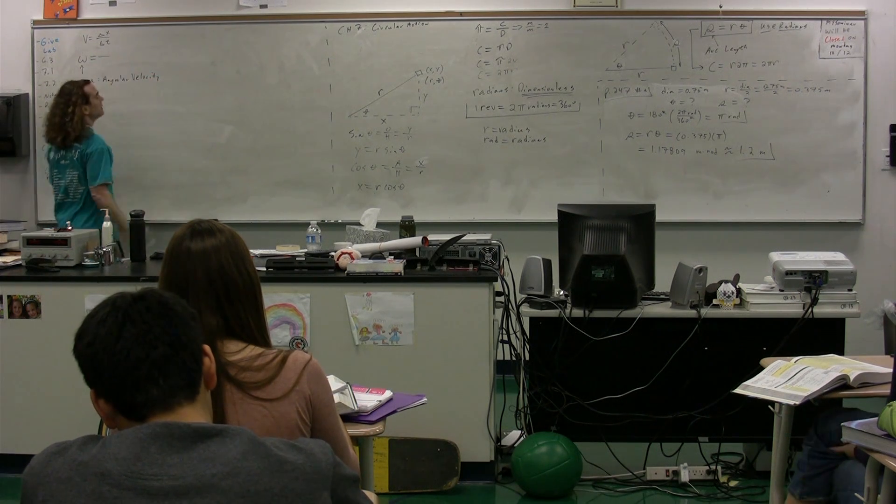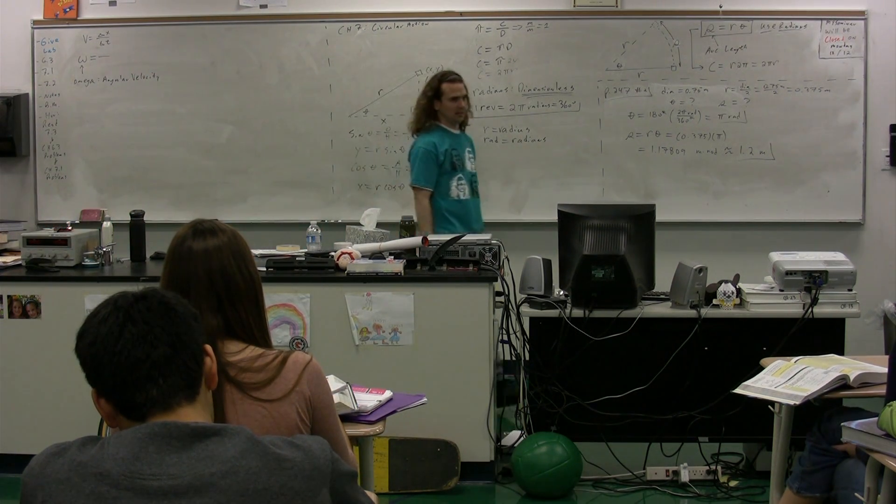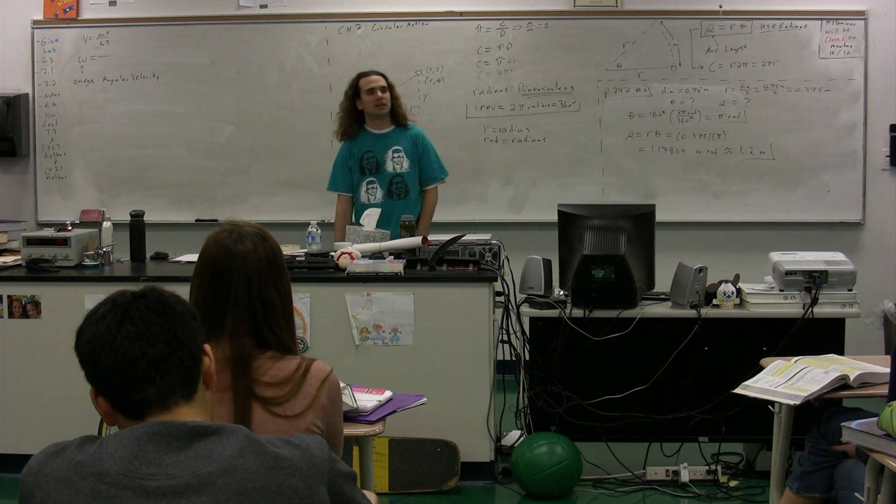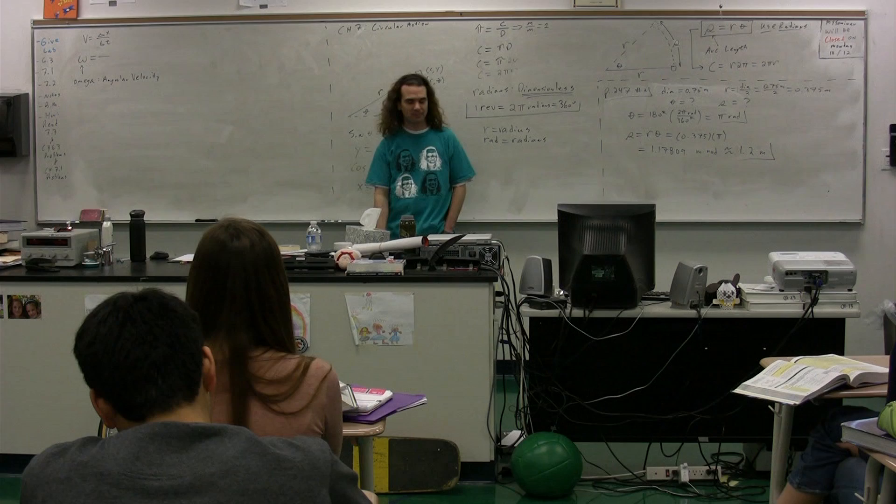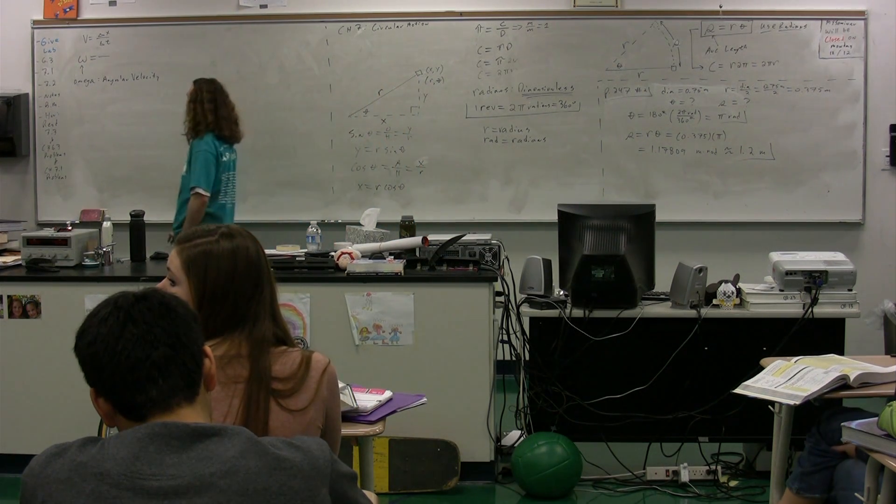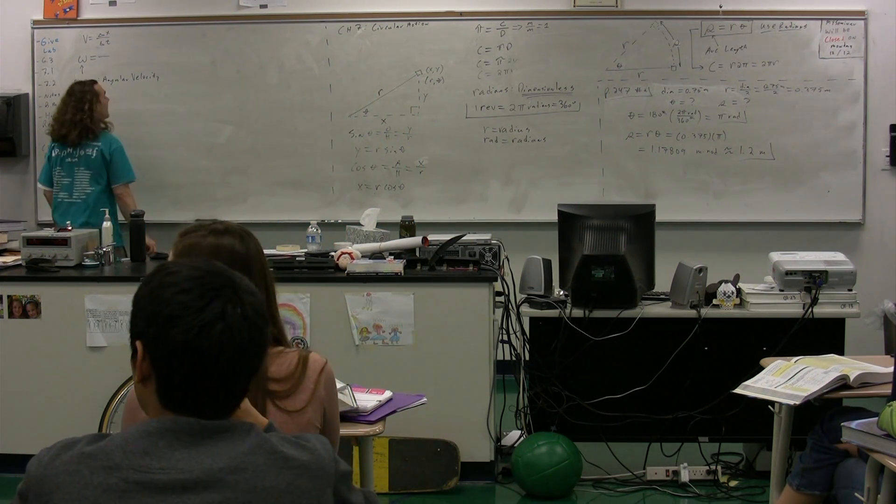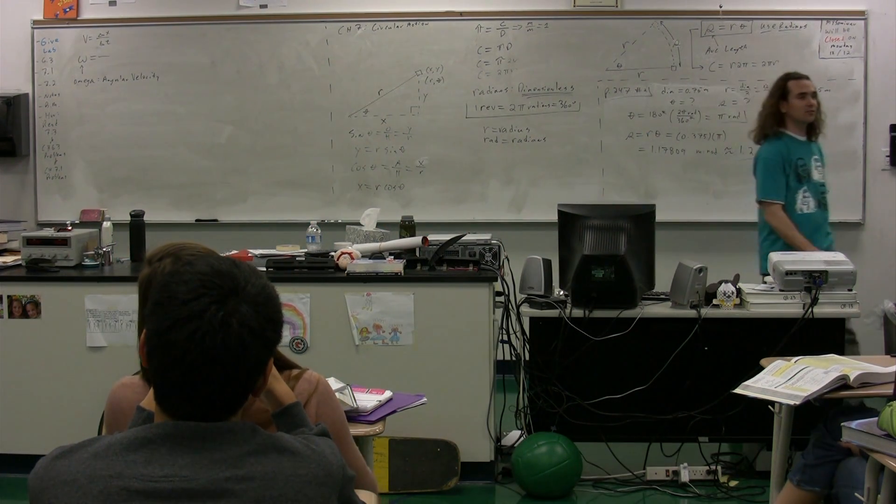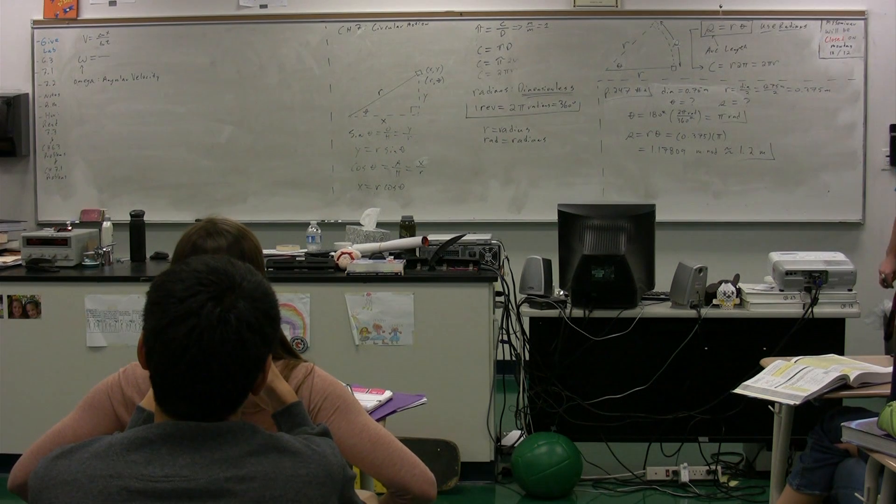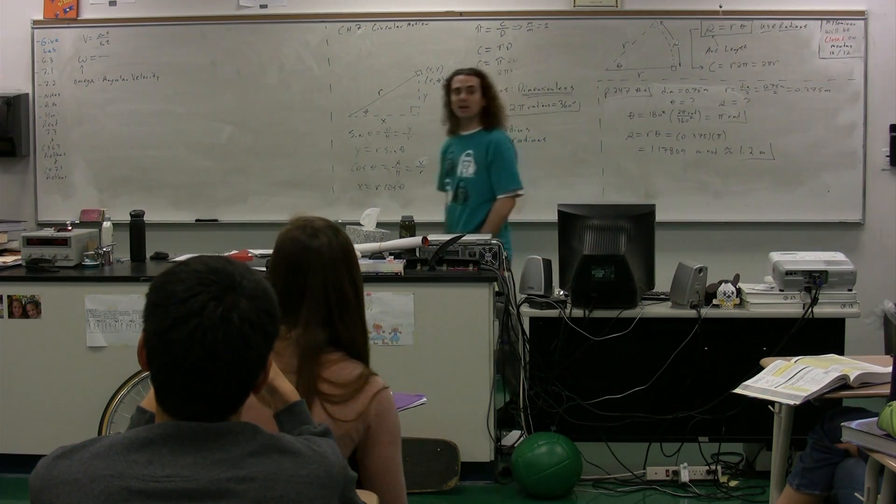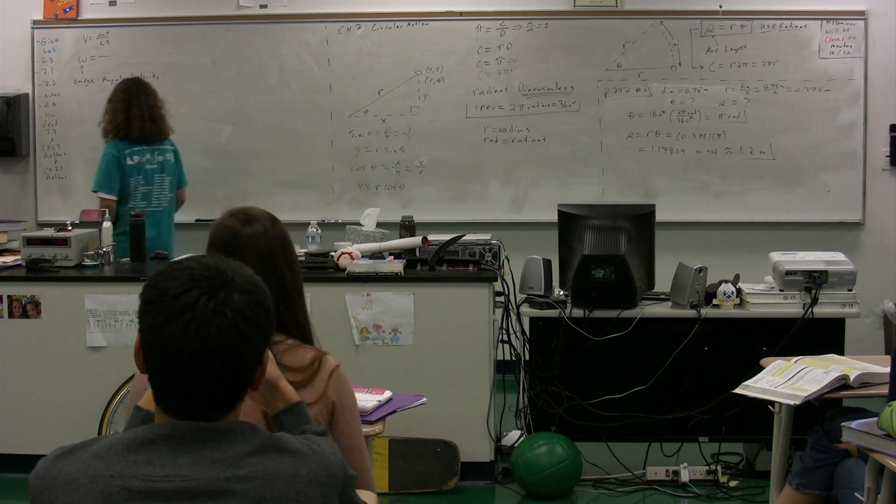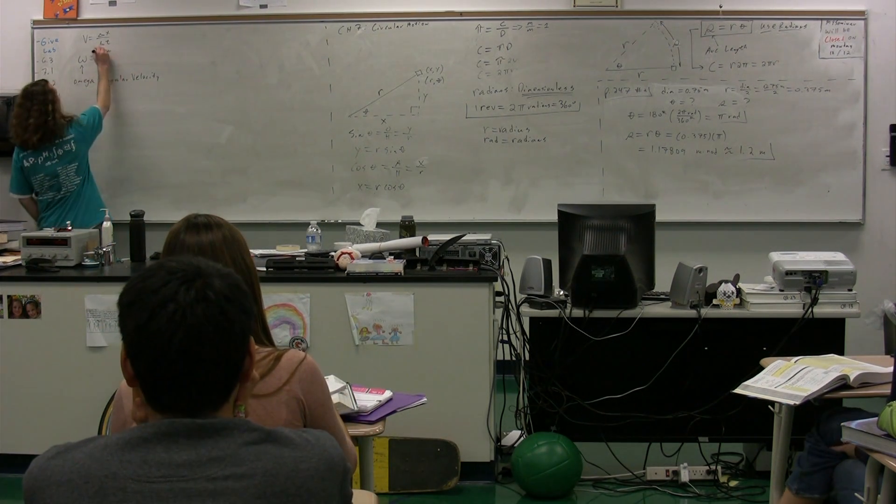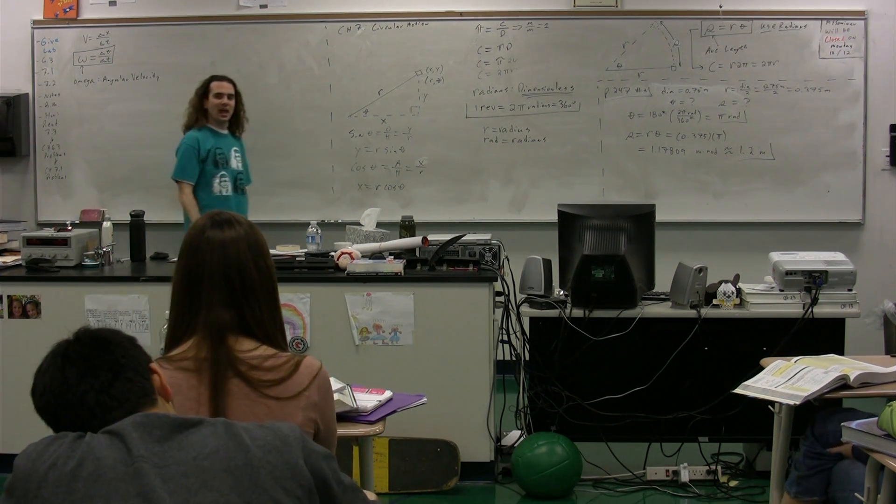If linear velocity is delta x over delta t, what then is angular velocity? It's not going to be arc length because arc length has to do with the linear. This is angular velocity. It's the change in theta over change in time. The angular velocity is change in theta over change in time, where theta is the angular position.